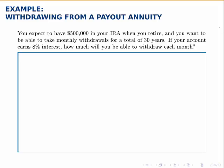In this situation, you know how much you expect to have in your retirement account at the moment of retirement, and you want to be able to take monthly withdrawals. Knowing that, you can figure out how much you can take out each month. In this example, you expect to have $500,000 in your account at the moment of retirement, and you want to take withdrawals for a total of 30 years.